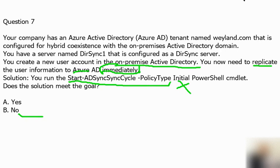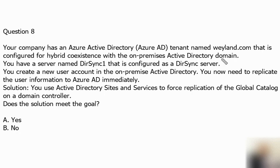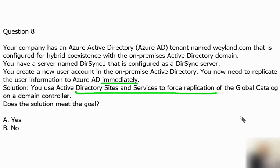Question number 8 is the same as the previous one with the same requirement of immediate synchronization, but the solution is different this time. The solution suggests: you use Active Directory Sites and Services to force replication. Force replication is not going to do the immediate update action on Azure Active Directory — it's on the global catalog. So it's not going to work with Azure AD and will not have an immediate update. The answer for this question is no as well.